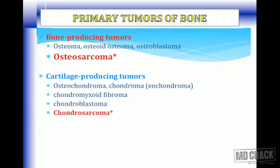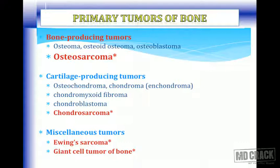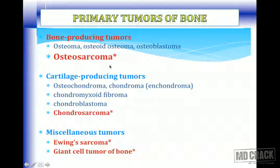The primary classification of important bone tumors includes bone-producing tumors: benign forms like osteoma, osteoid osteoma, and osteoblastoma, with the malignant counterpart being osteosarcoma, also called osteogenic sarcoma. Cartilage-producing tumors include benign forms like chondroma, osteochondroma, chondromyxoid fibroma, and chondroblastoma, with the malignant counterpart being chondrosarcoma, which is common especially in the hip bones.